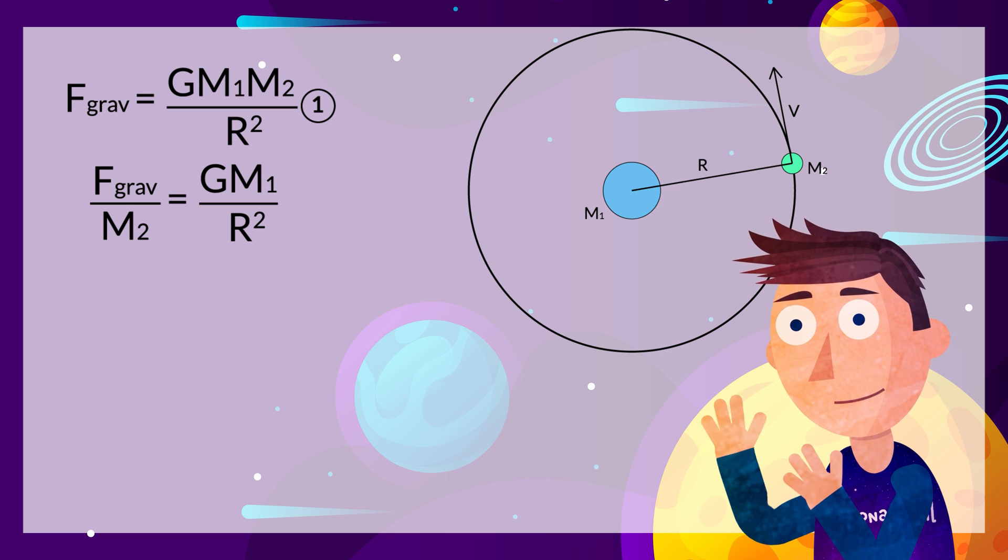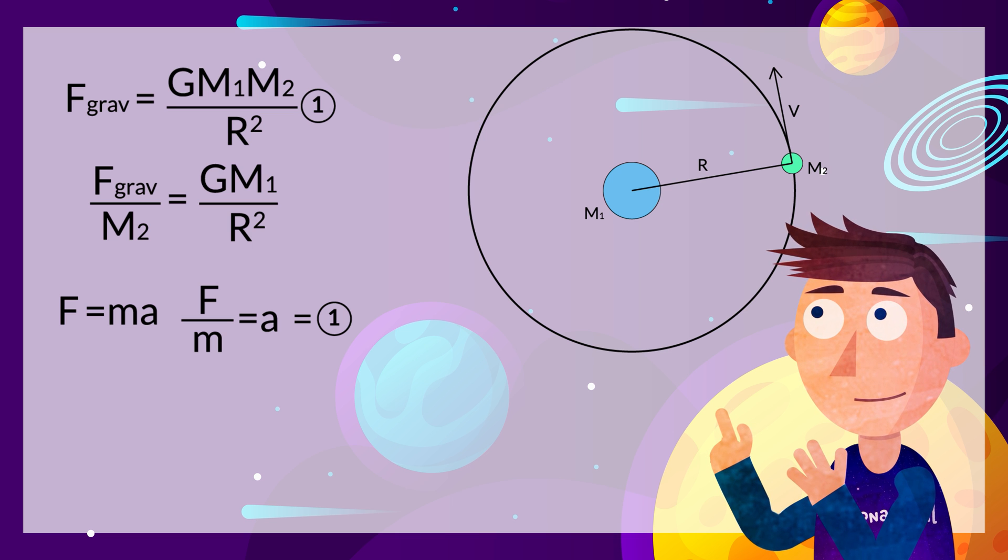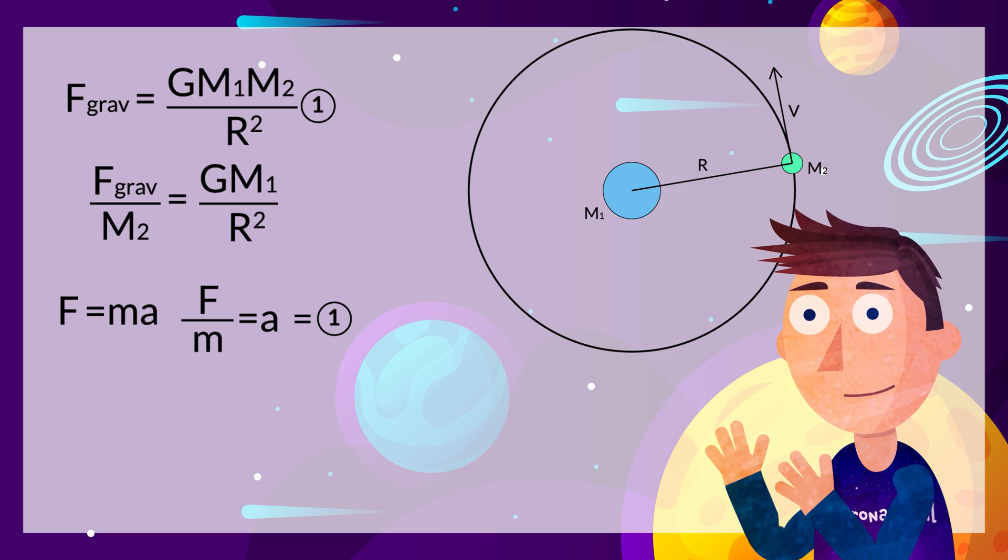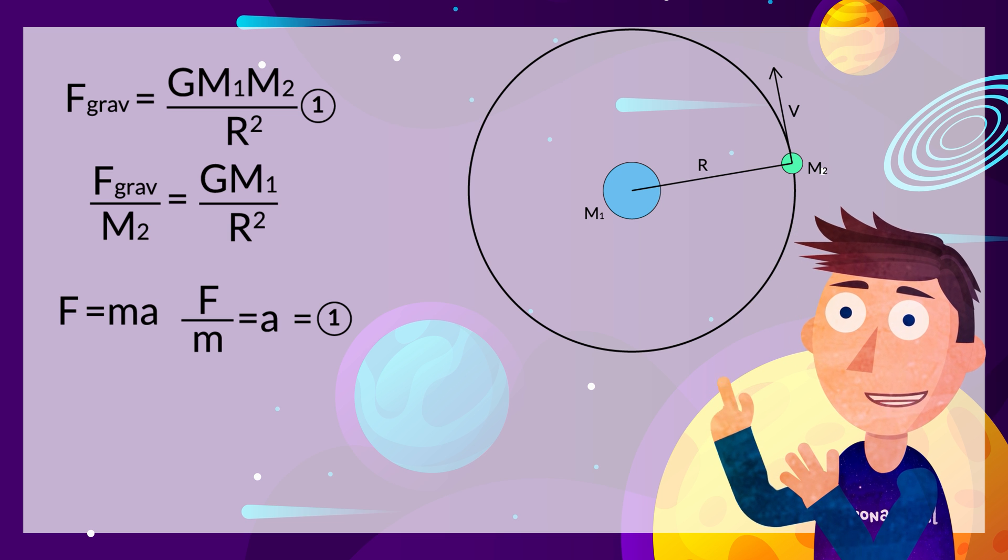Let's start with Newton's second law, which is F equals ma. Rearranging both of these equations here to get F over m on one side, we find that the acceleration is equal to force over mass, which is also equal to this equation right here.